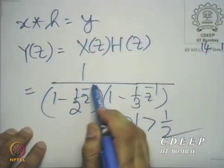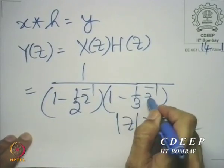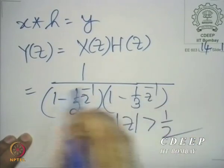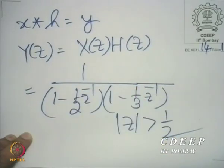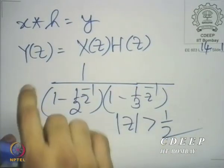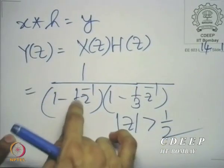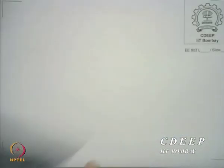Let us get back to this example of Y(z). You see here, you have a product of two Z-transforms, and the beauty is this product of the two Z-transforms can also be expressed as a linear combination of the two Z-transforms. So, suppose I wish to find the sequence y(n) from here, how would I go about doing it?